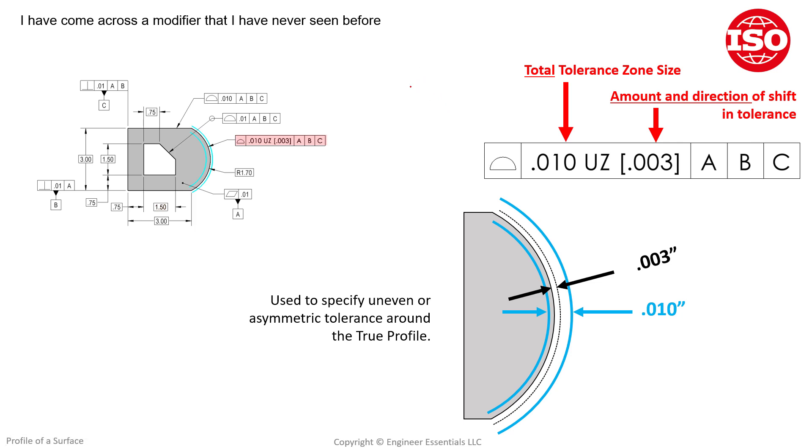So the value that you see here in the first part of the feature control frame is still the total tolerance zone size. So when we see this, we're saying this surface here that we're pointing to with this feature control frame—this surface has a tolerance zone, a total tolerance zone of 0.010. So the zone still is completely this size, and it mimics the shape of the surface we're controlling.